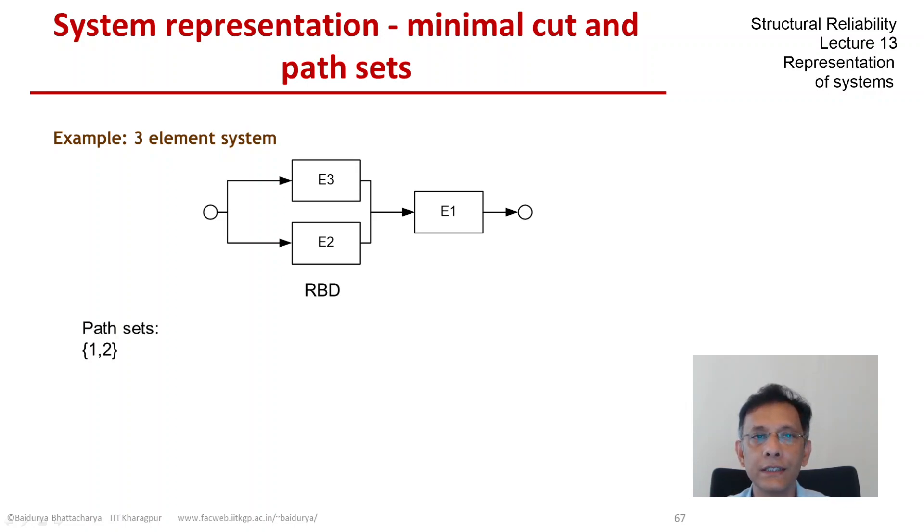So the path sets of the system are 1, 2, the next one is 1, 3 and we could also have the entire set 1, 2, 3. Now I am sure you have been able to guess which ones are the minimal path sets.